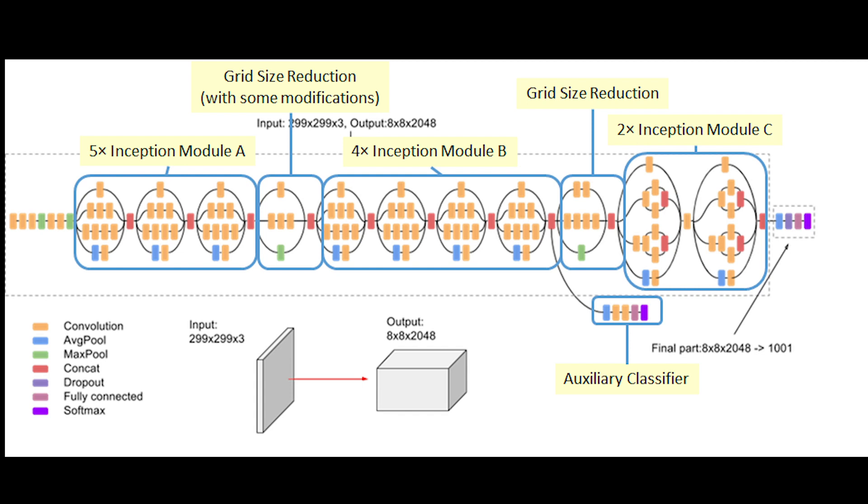Depending on the complexity of the problem you're looking to solve, you might only need a few layers, or you might need tens. Additionally, these layers might not stack one on top of another. For example, Inception v3, a deep neural network that can identify objects in images, has a structure that looks like this. As you can see, it has a lot of layers, but they're not all one on top of the other. Some layers have sub-layers that perform different functions, but this is only the beginning of how we can think about how big an algorithm is.